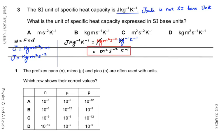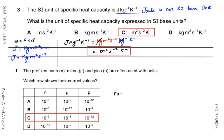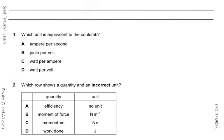In question number one, the prefixes nano, micro, and pico are often used with units. Which row shows their correct values? Nano is exponent minus 9, micro is exponent minus 6, and pico is exponent minus 12. By this, C is the correct answer.